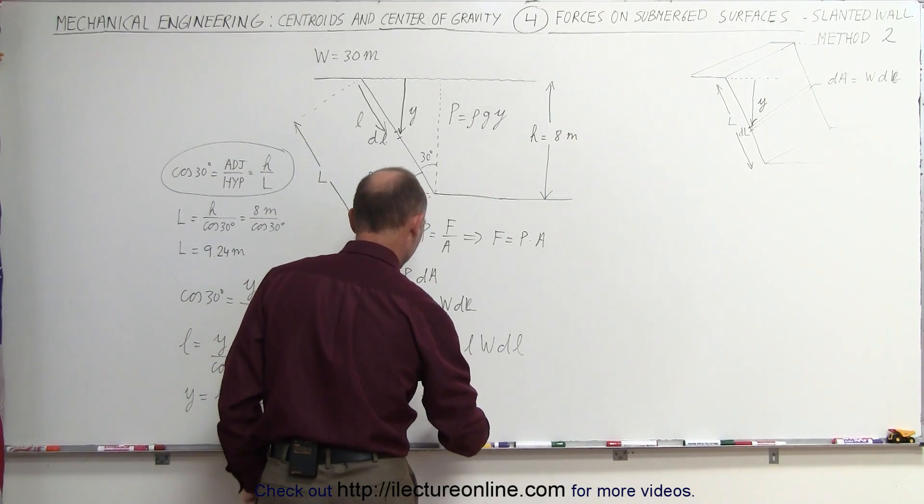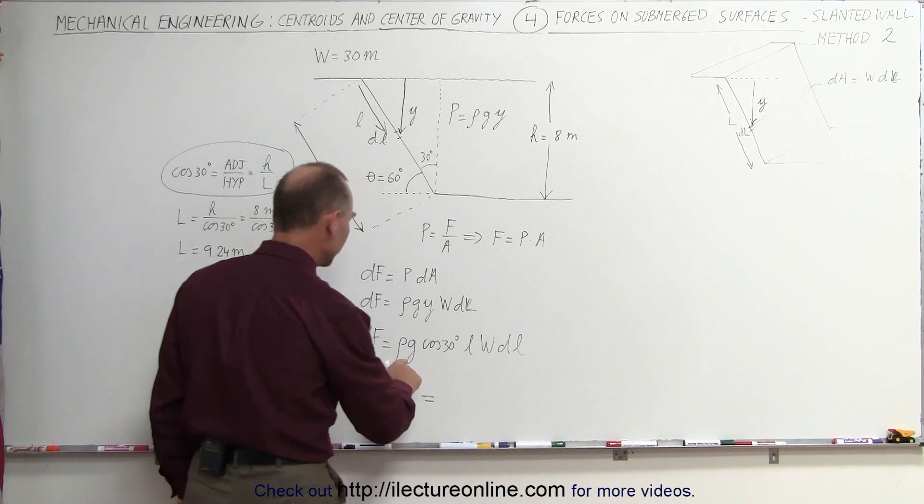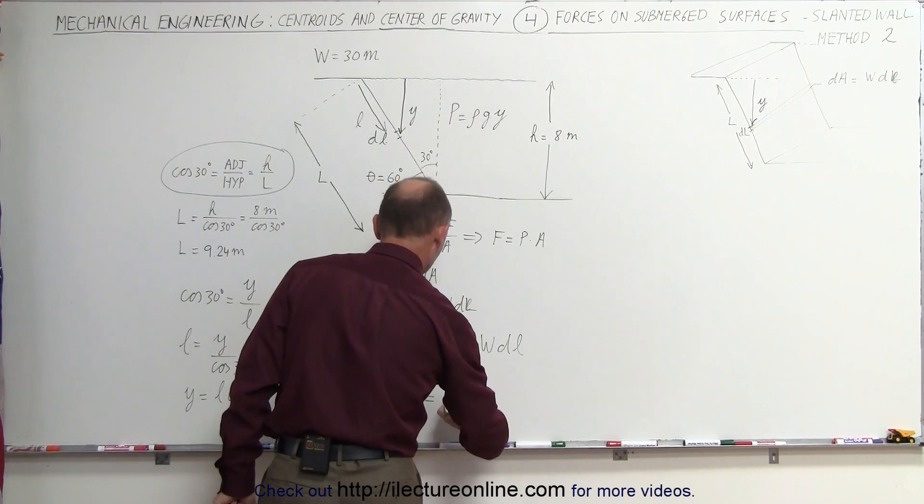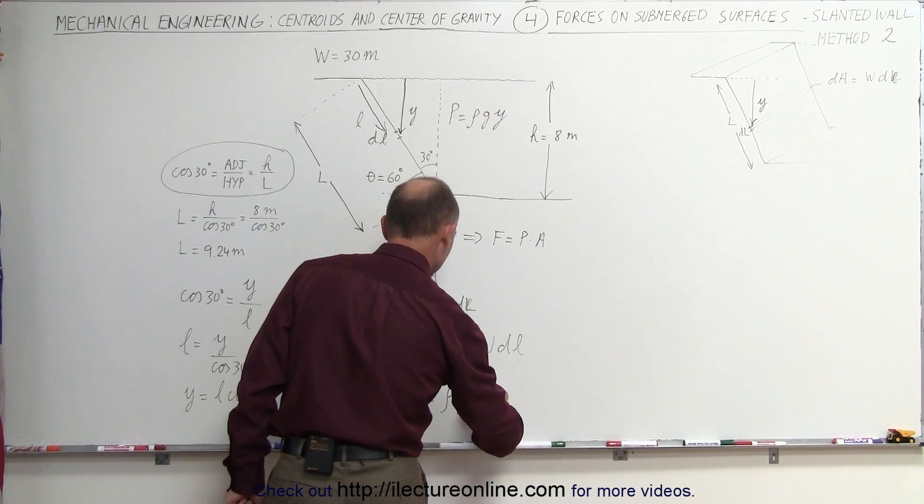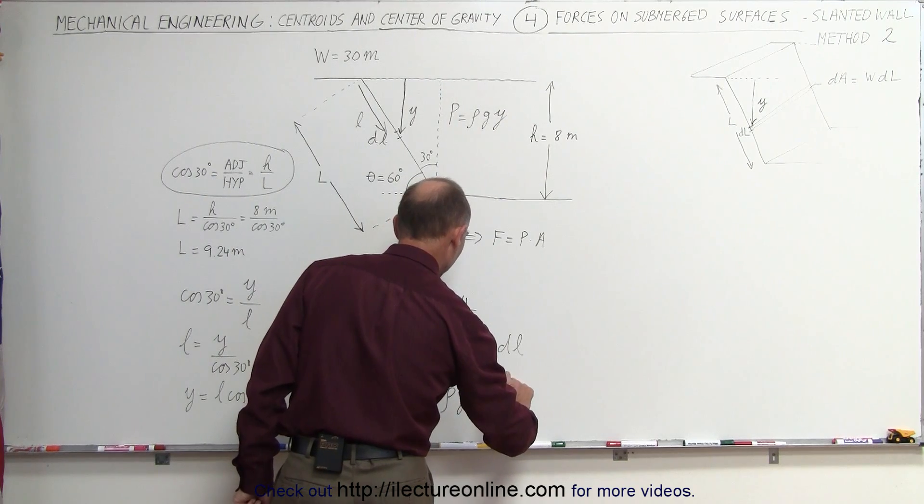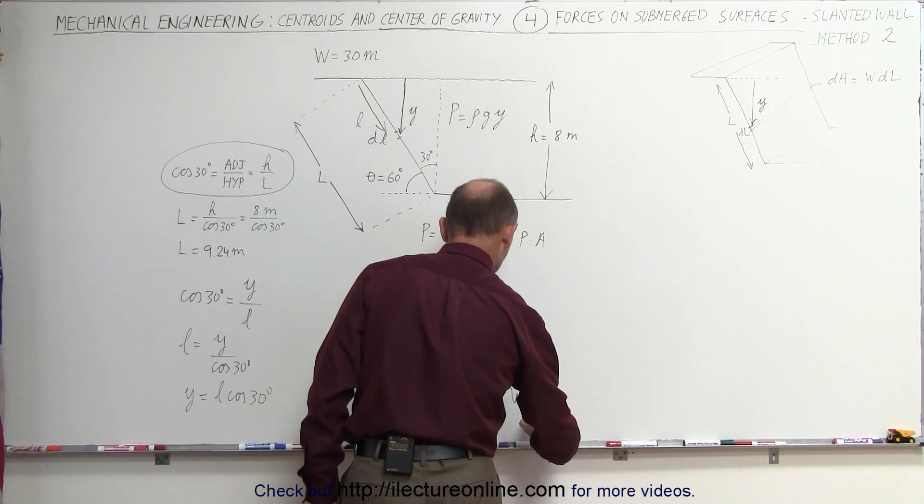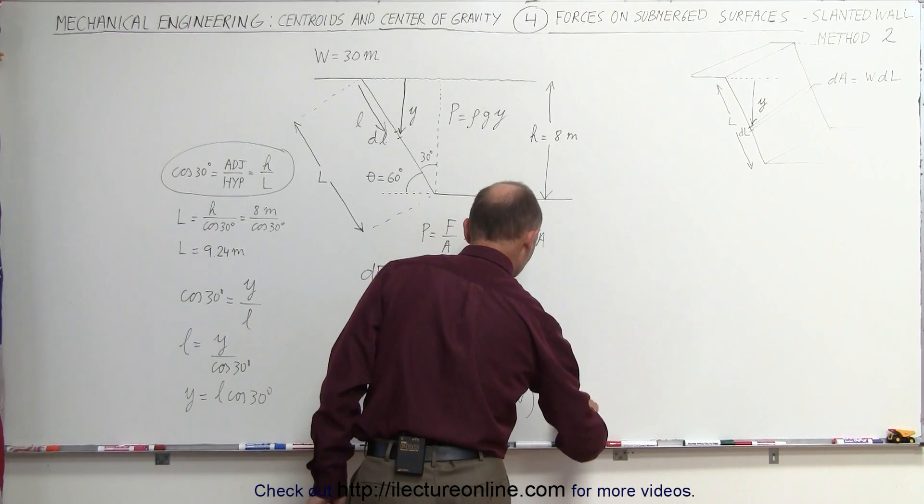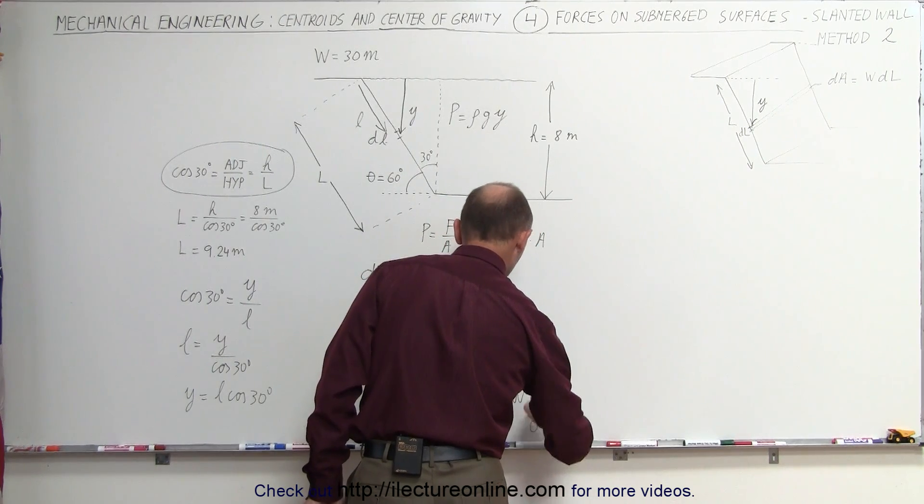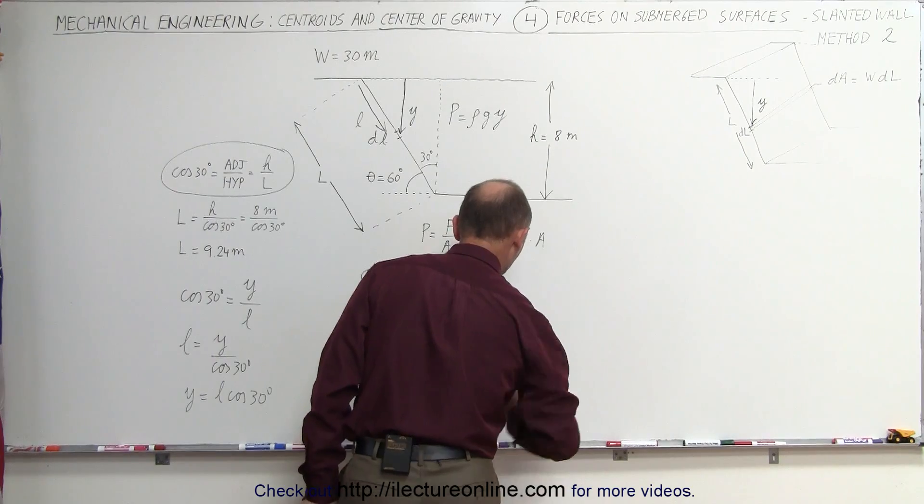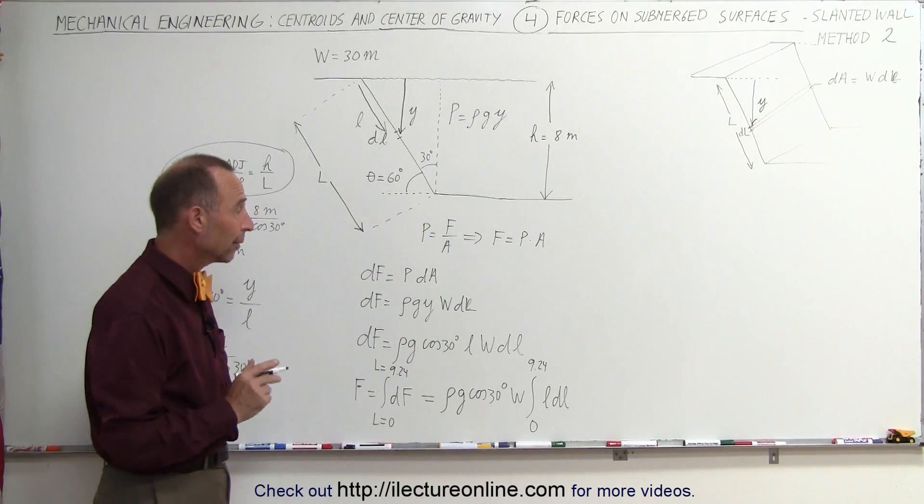This is then the integral of, actually let me take out all the non-variables. That's the density times g times the cosine of 30 degrees times w, w is the width, that's also constant, times the integral of l times dl going from 0 to 9.24. Now we can go ahead and integrate that.